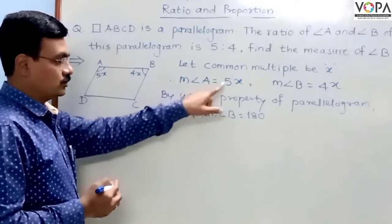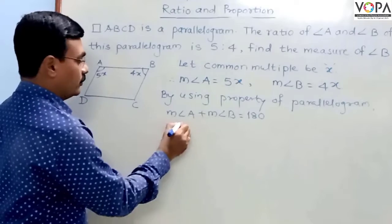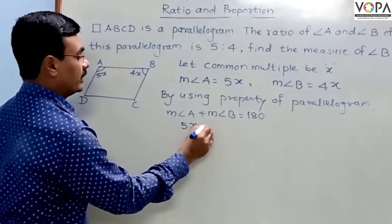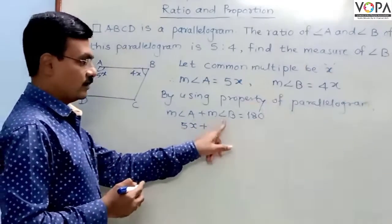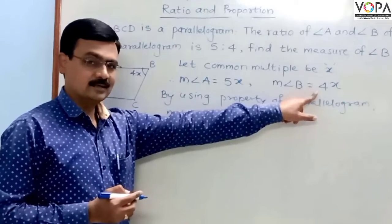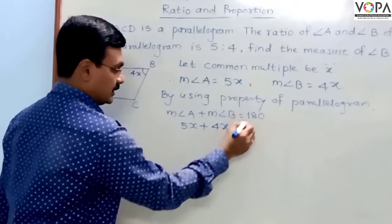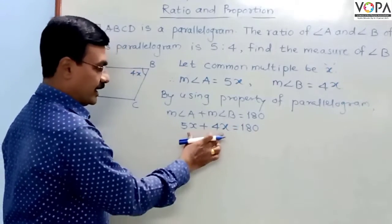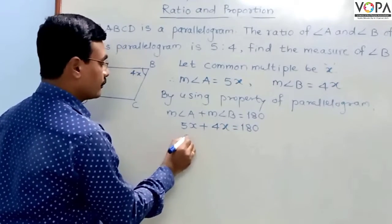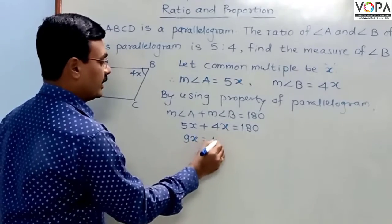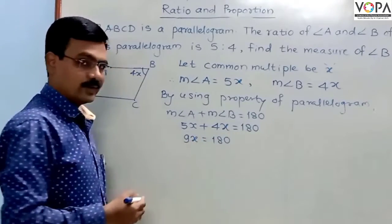Those two adjacent angles of the parallelogram are supplementary. Measure of angle A, we assumed that measure as 5x. Therefore, 5x plus measure of angle B, which is assumed as 4x, equals 180. If we add them, their sum is 9x equals 180.